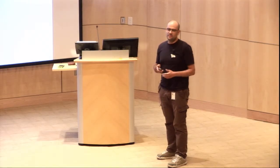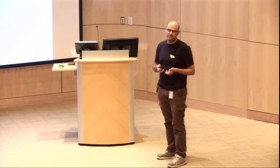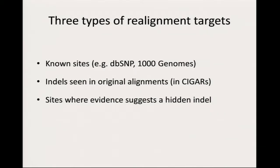There are two principles to how this works. The first is to spot the regions that are likely to show these problems and are worthwhile to realign. Because there's a huge genome in the case of humans, you don't want to try to do it in all positions — you want to concentrate where the problem can occur. You use different sources for clues to identify what those regions would be.